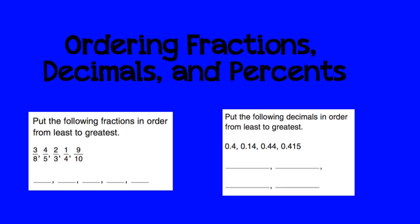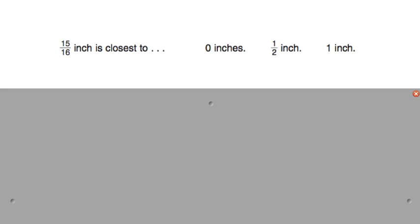In this video, we will be ordering fractions, decimals, and percents. When we're ordering fractions, decimals, and percents, sometimes it's easiest to think about if our fraction or decimal or percent is closest to 1, one half, or 0. This helps us because we can use these numbers of 1, one half, and 0 as benchmarks.